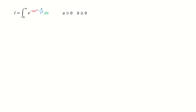Here we require a is an arbitrary positive constant, and b is an arbitrary non-negative constant. So first, we do the reciprocal substitution. We let u equals to 1 over x, and then we can solve for x, which is equal to 1 over u. And also we do the derivative to find dx.